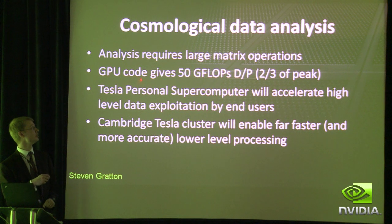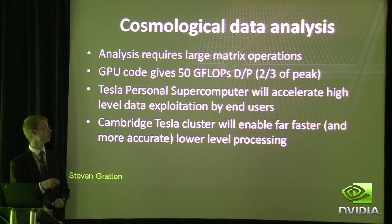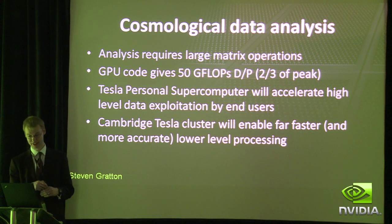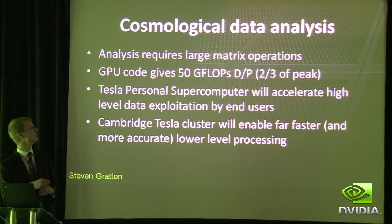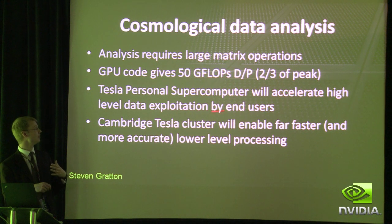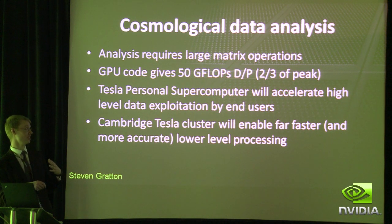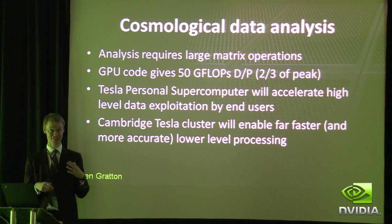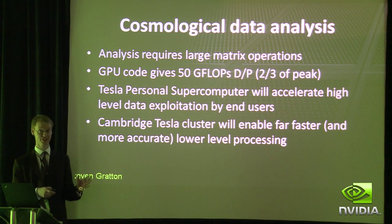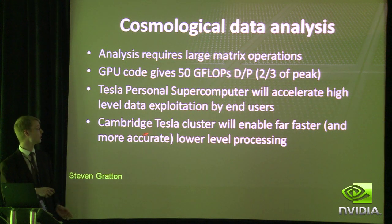We've now got a GPU code which gives us 50 gigaflops — that's double precision — which is two-thirds of the absolute peak performance on a modern GPU card. With a Tesla personal supercomputer with three or four of these cards, that's going to accelerate the high-level data exploitation by end users.